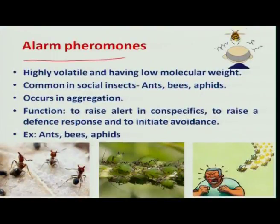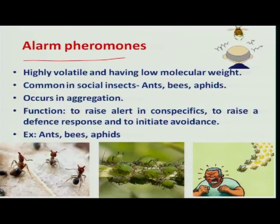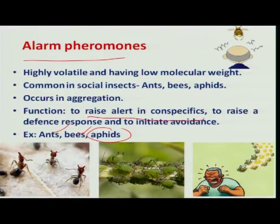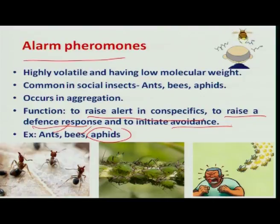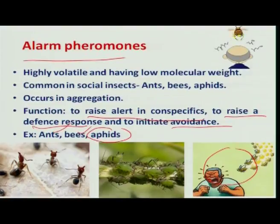What are alarm pheromones? As the name indicates, alarm pheromones create some defensive mechanism and also some avoidance mechanism. This mechanism is much studied in social insects like ants and bees and also in some aphid species. The function of alarm pheromones is to raise an alert in the same species, thereby raising some defense and avoidance mechanism. For example, when a bee attacks some individual, it releases alarm pheromones and the other honey bees follow the victim for further attack.